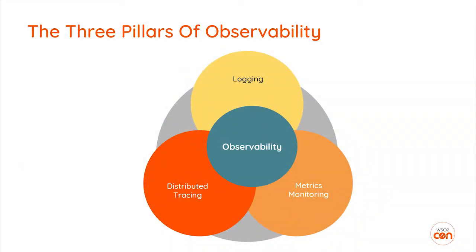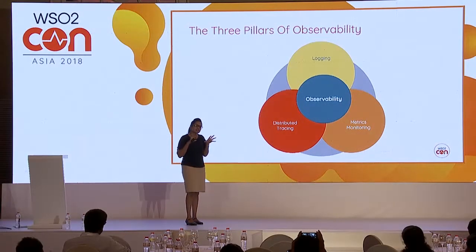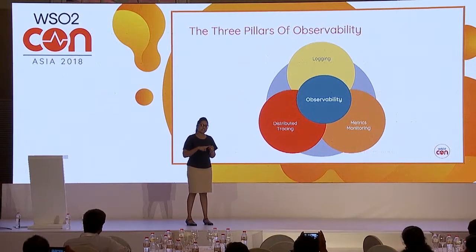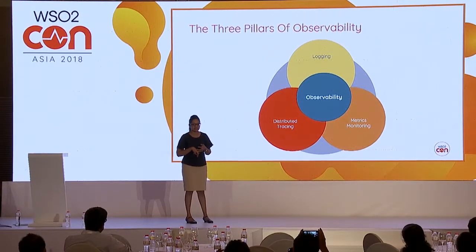Now that we've cleared up what observability means, let's dig deeper into observability and its related tools and concepts. There are mainly three factors that constitute observability: one is logging, two is metrics monitoring, and three is distributed tracing.